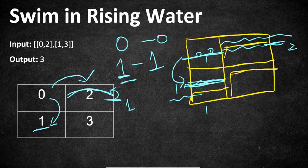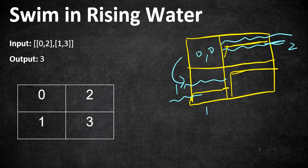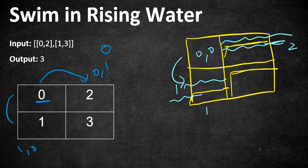Understanding all this, let's get into the solution. We start from cell (0,0) at time 0. From (0,0) you can travel to (0,1) or (1,0) since this is the leftmost cell and we can only go four-directionally. To travel to (0,1) you must wait 2 time units, but to travel to (1,0) you only need to wait 1 time unit because at time 1 the water level is 1 and the elevation there is 1. So at time 1 we travel from (0,0) to (1,0).